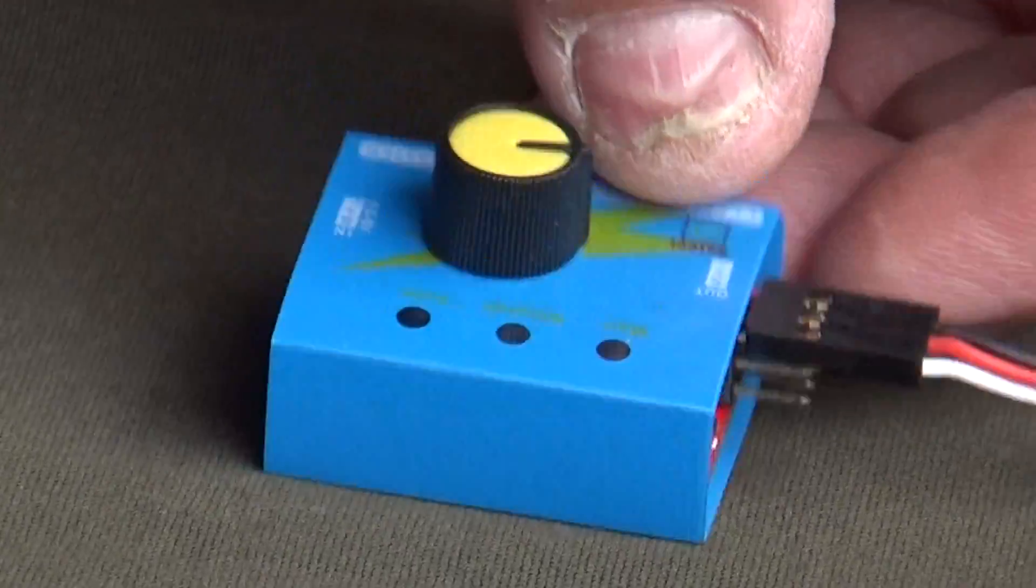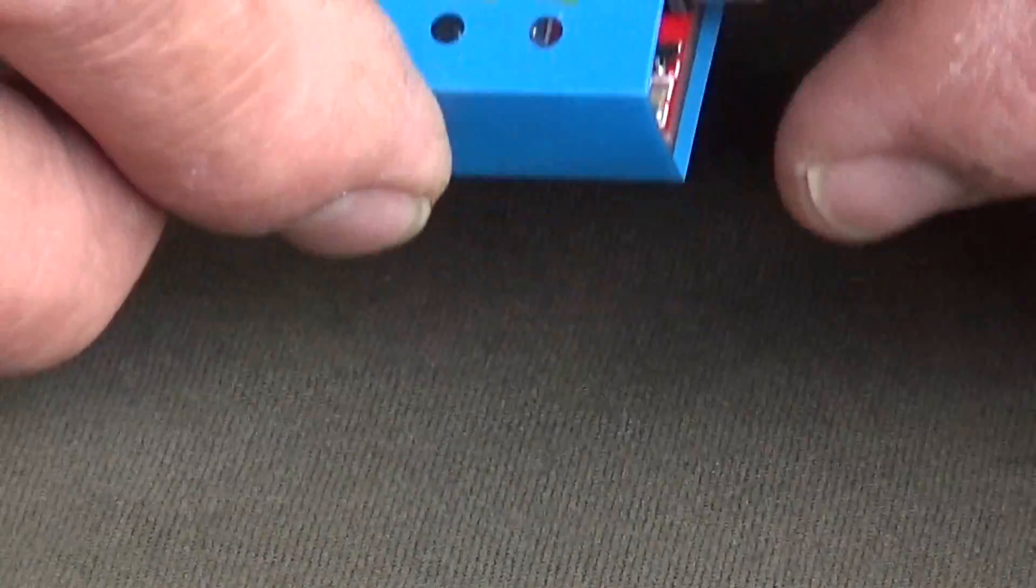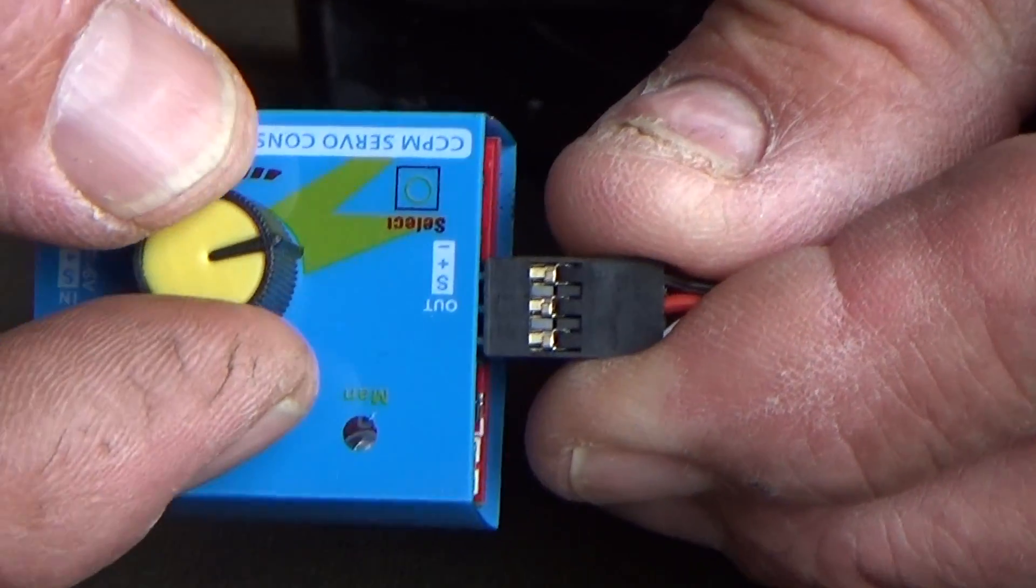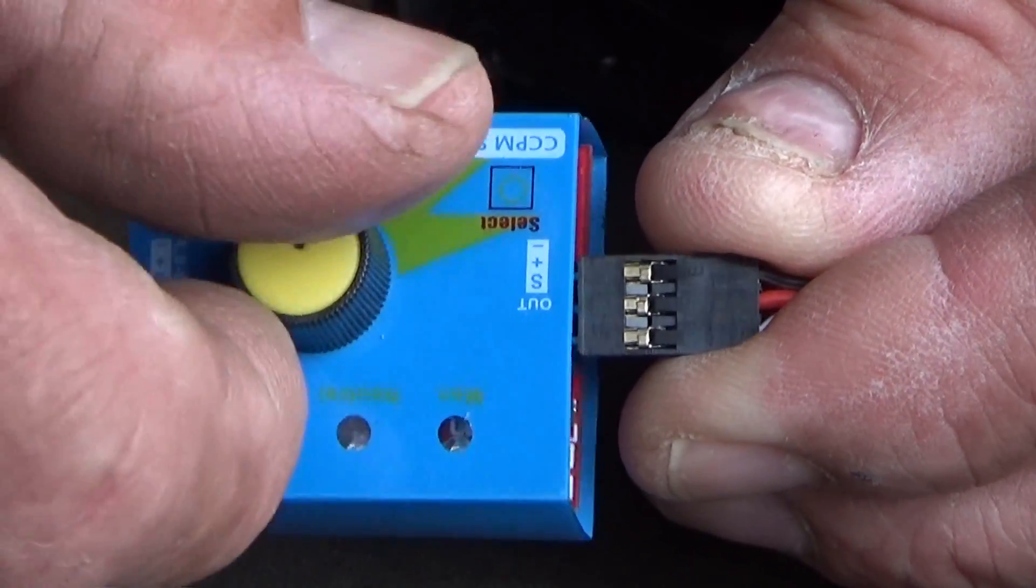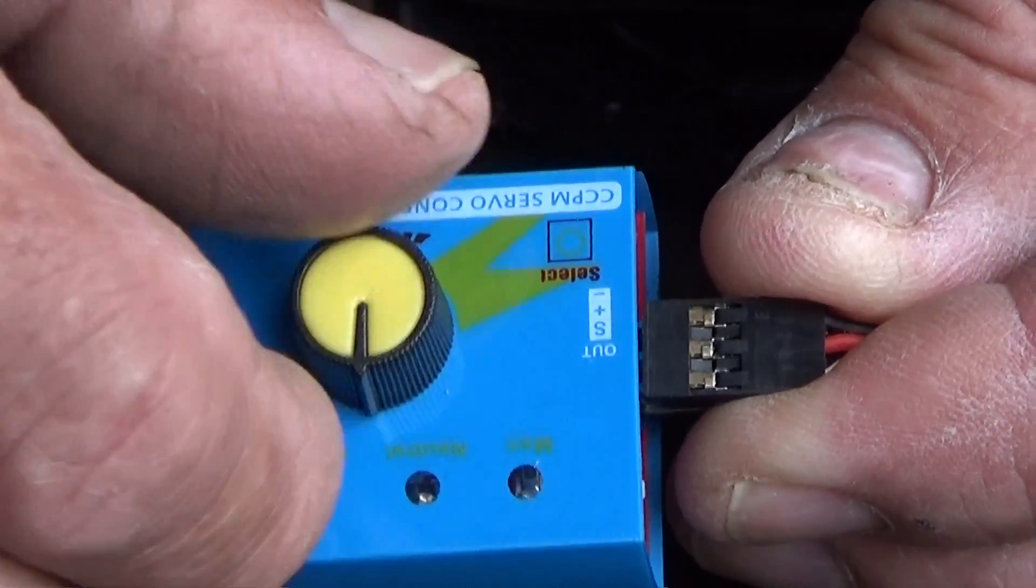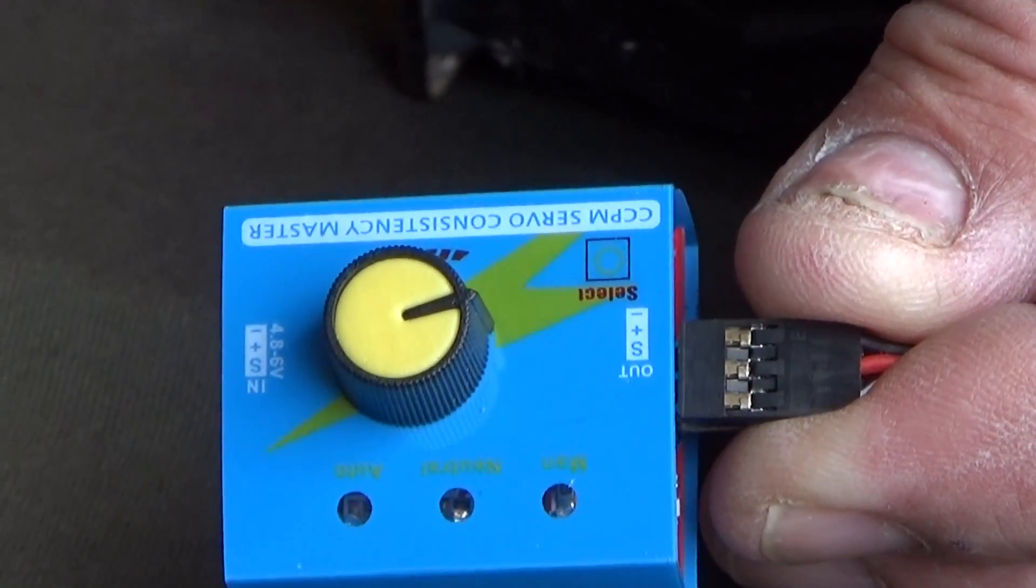So we're going to power this up. Now we want to make sure our dial is turned all the way down. To the right which is clockwise is turned up and to the left is turned down.